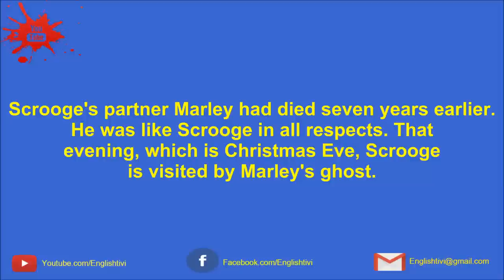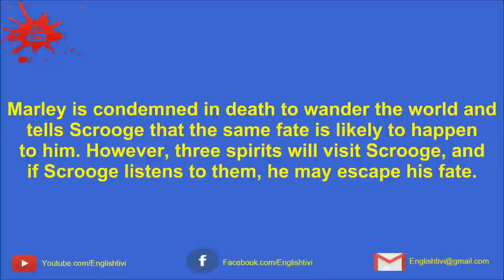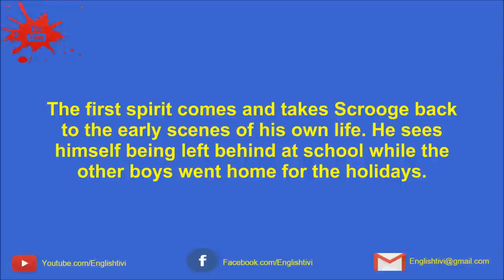He was like Scrooge in all respects. That evening, which is Christmas Eve, Scrooge is visited by Marley's ghost. Marley drags steel chains round about him, which contain keys, cash boxes, ledgers, purses, and deeds. These are the things that Marley cared about when he was alive. Marley is condemned in death to wander the world and tell Scrooge that the same fate is likely to happen to him. However, three spirits will visit Scrooge, and if Scrooge listens to them, he may escape this fate. The first spirit comes and takes Scrooge back to the early scenes of his own life.